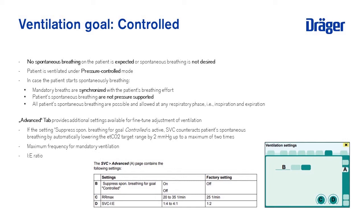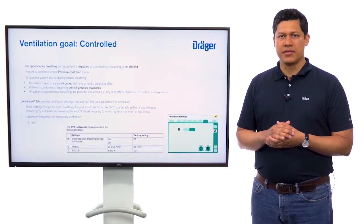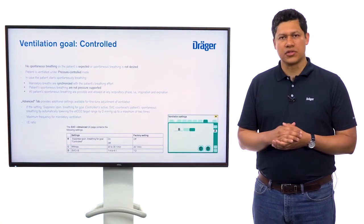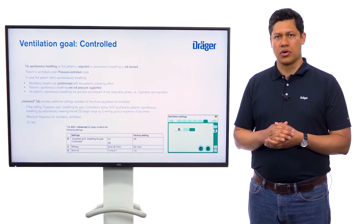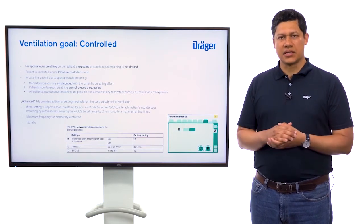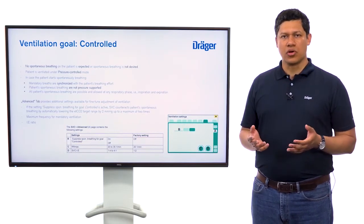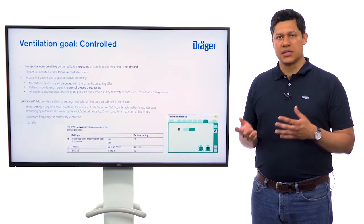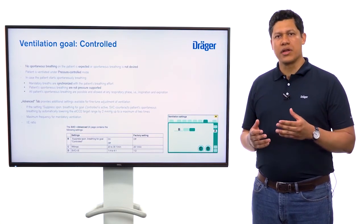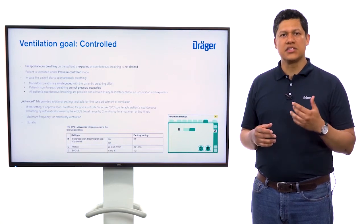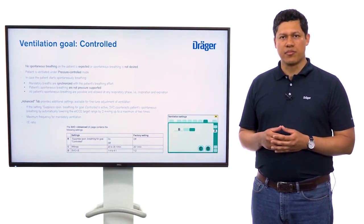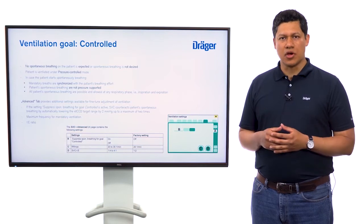In the advanced tab, there is an opportunity to fine-tune the ventilation adjustment. A third option is the suppression of spontaneous breathing within the ventilation goal Control. If this option is active, Smart Ventilation Control will suppress the patient's spontaneous breathing by lowering the ETCO2 range by 2 mmHg, up to a maximum of 2 times.